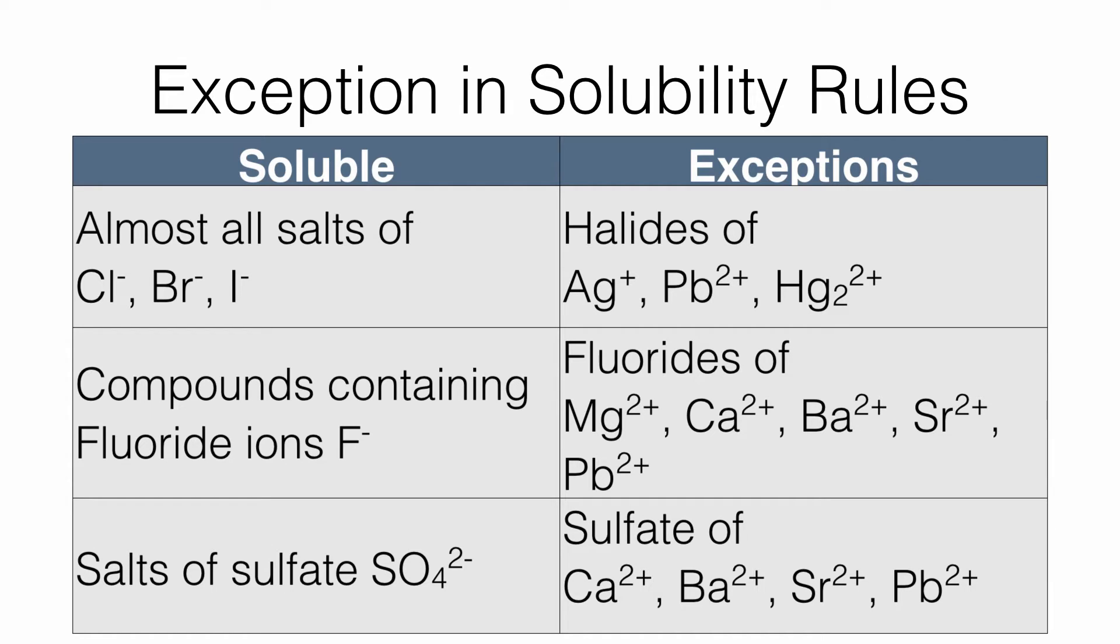Salts of sulfate that are insoluble are calcium sulfate, barium sulfate, strontium sulfate and lead sulfate. You will notice that calcium, barium and strontium belong to group 2. So it is easy to remember that.